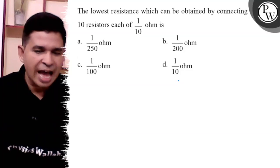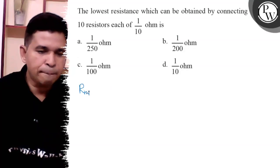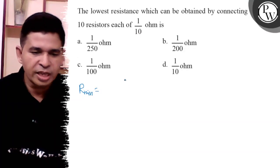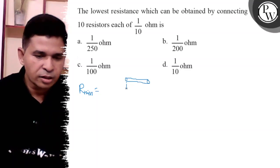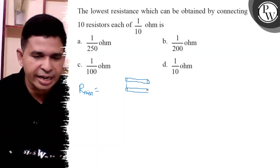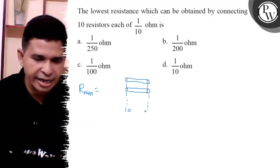We know that the minimum resistance is obtained when parallel combination is used. So here 10 wires of each of resistance 1 by 10 are connected in parallel. 10 resistances are connected in parallel.